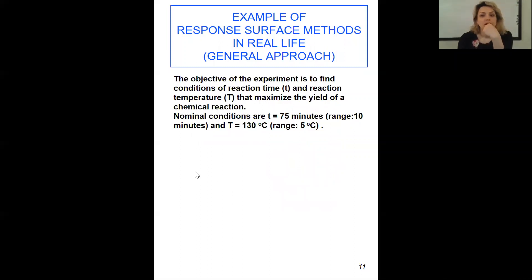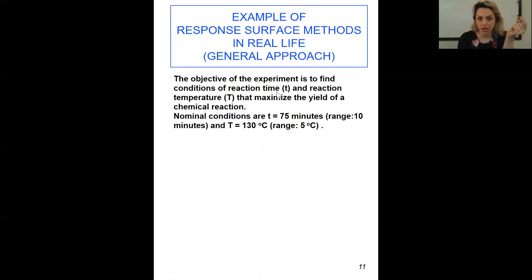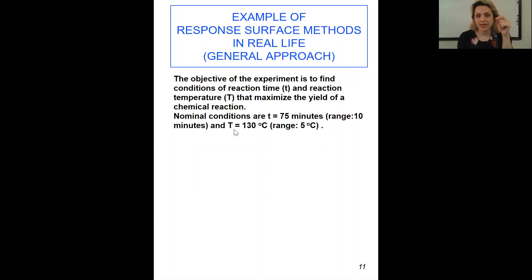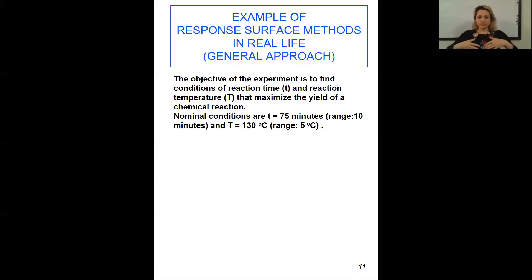Here is an example of the response surface methods, like in reality, what they're going to do. Let's say you're working in your research or in your lab and you have this objective. The objective of the experiment is to find conditions of reaction time and reaction temperature that maximize the yield of the chemical reaction. You know that from the similar situation that the nominal conditions are t equal to 75 minutes and 130 degrees centigrade, the range could be like 10 minutes as a starting point, and the other range can be 5 degrees centigrade. You want to develop your design of experiment and go through the different steps of the response surface methods.